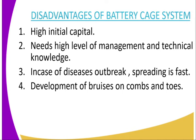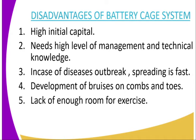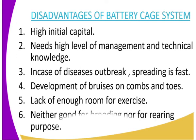Number four, development of bruises on the combs and toes, as the poultry feed, they normally insert their necks and combs through the wire mesh, and as a result the wire mesh will cause bruises on the combs and toes. Number five, lack of enough room for exercise. And number six, it is neither good for brooding nor for rearing purposes.